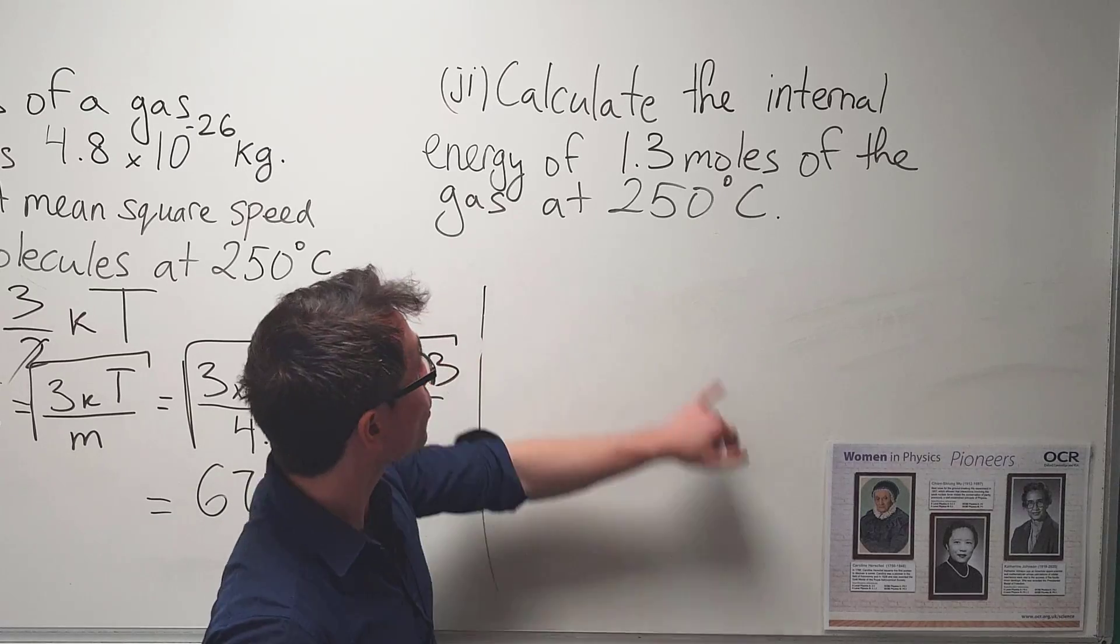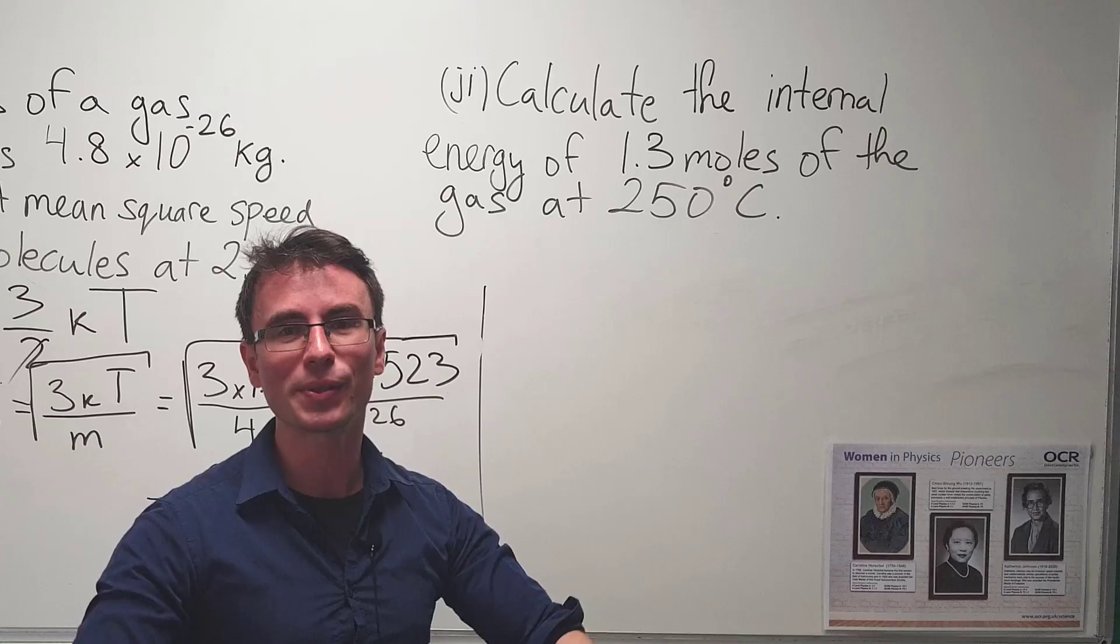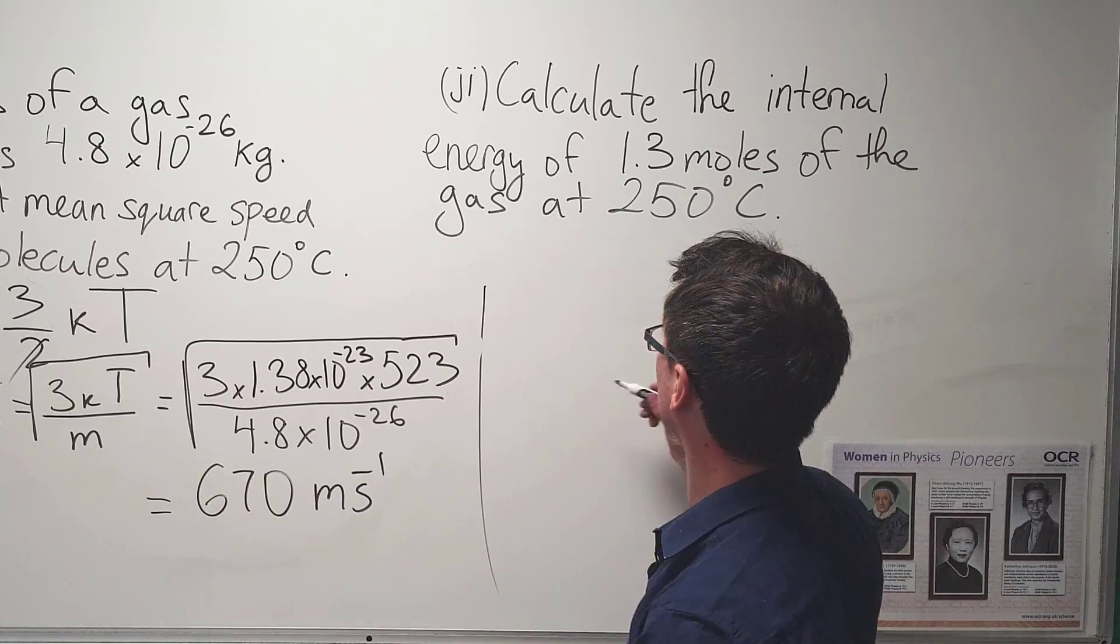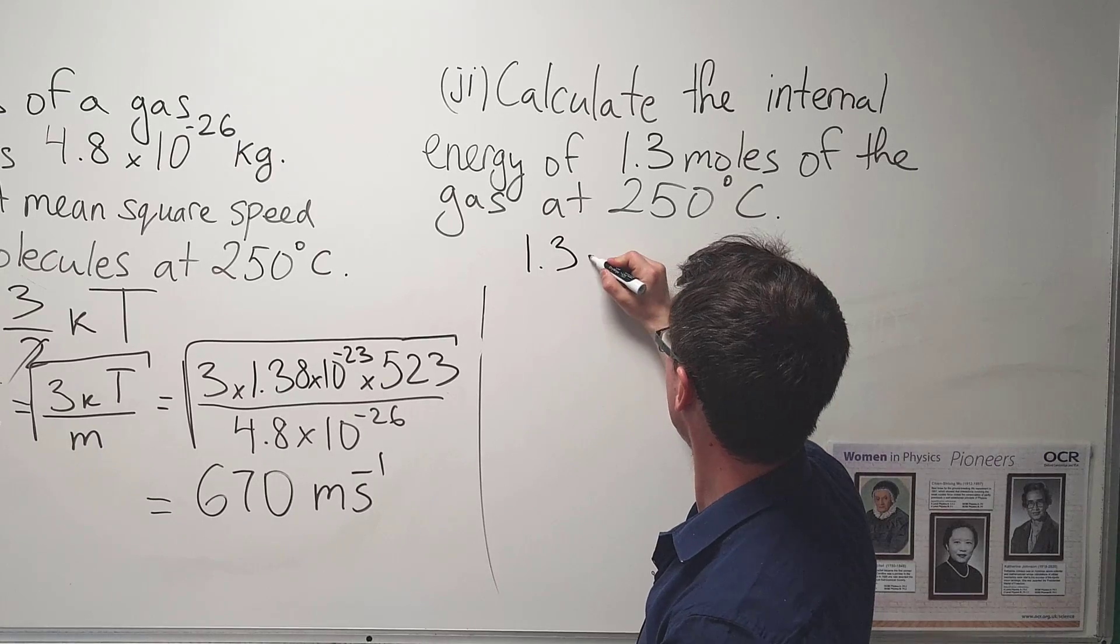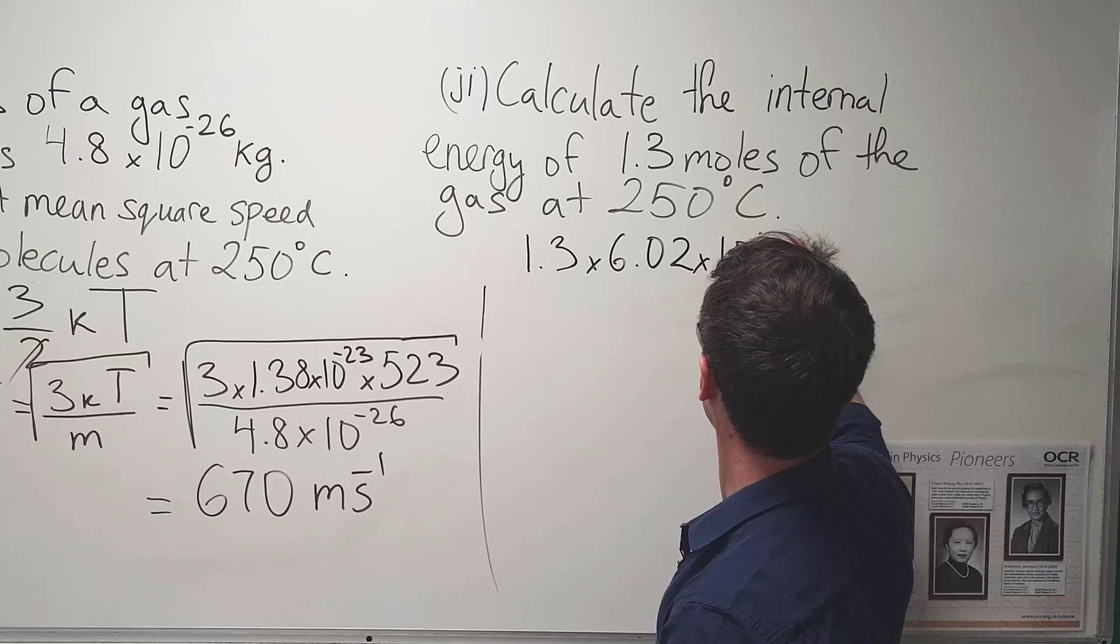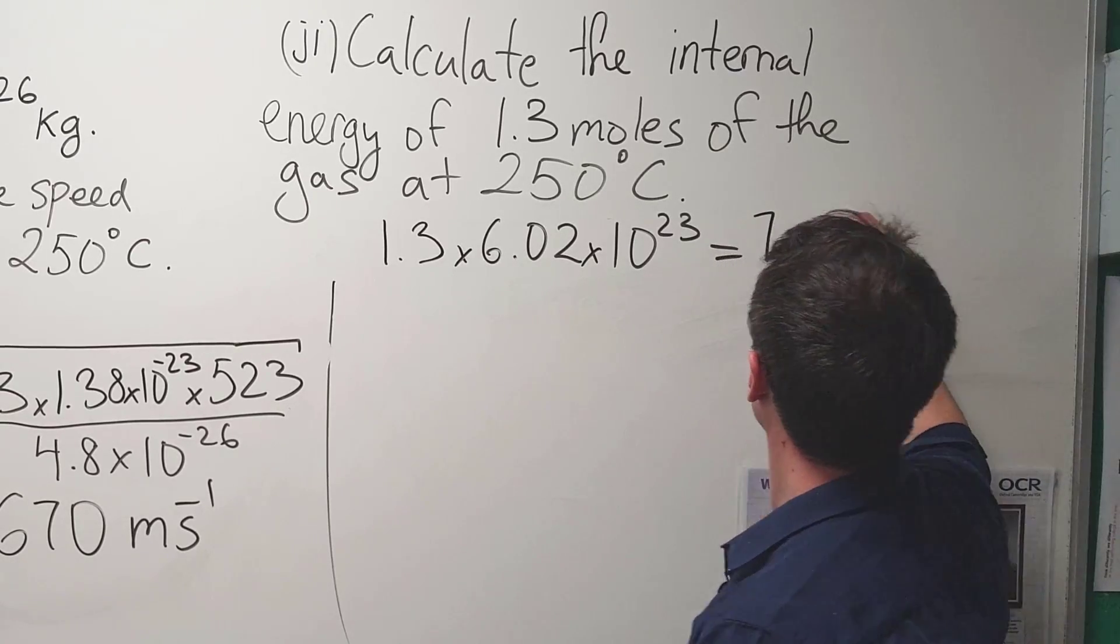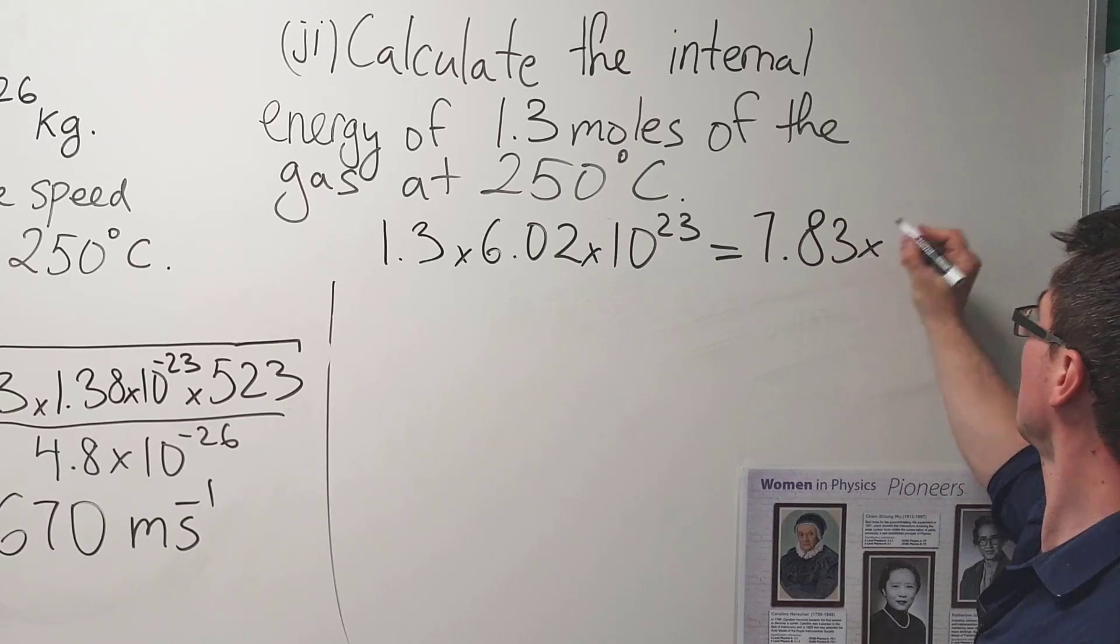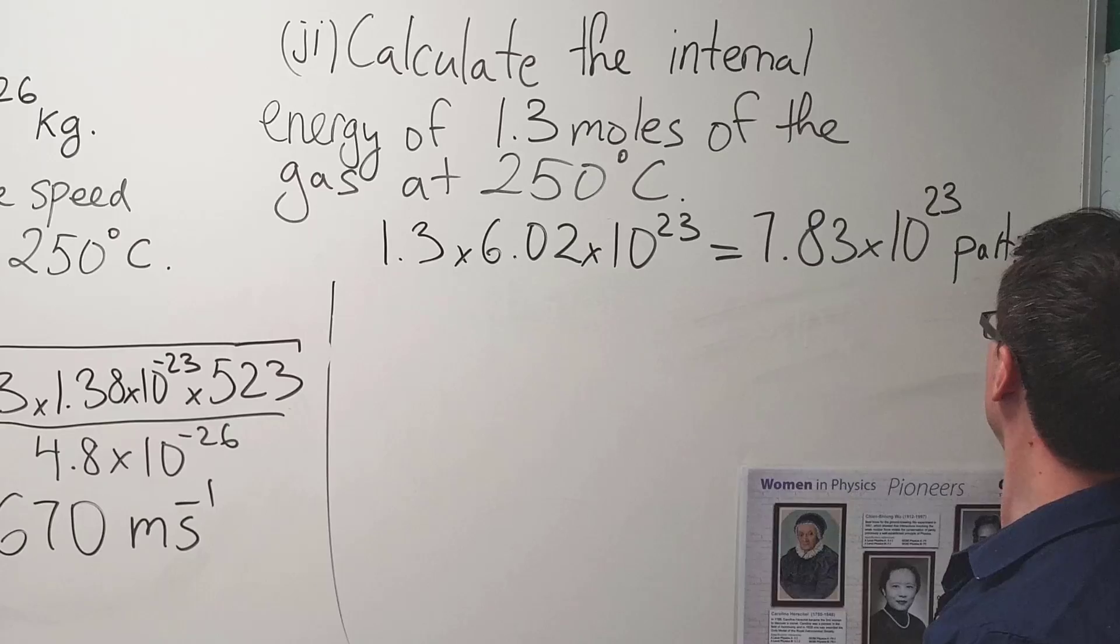All we need to do to tackle this problem is to find how many particles there are and then multiply it by that expression. Because we're dealing with 1.3 moles, well, using Avogadro's number, we can figure out the number of particles. So, I'm going to say the 1.3 moles multiplied by Avogadro's number, which is 6.02 times 10 to the power of 23 is equal to 7.83 times 10 to the power of 23 particles.